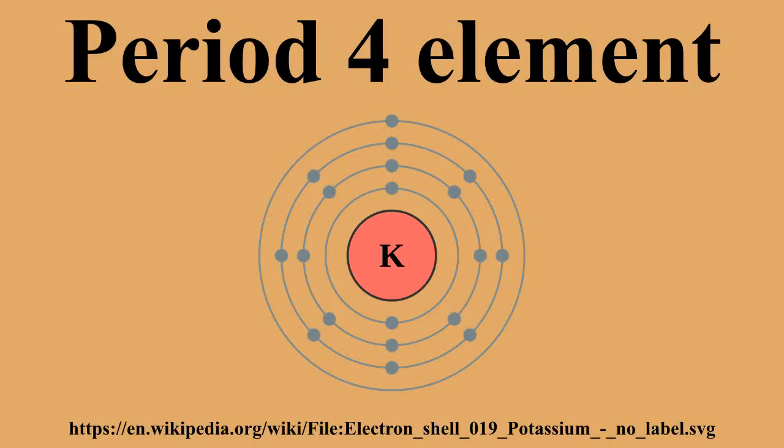Every single one of these elements is stable, and many are extremely common in the Earth's crust and core. It is the last period with no unstable elements at all. Many of the transition metals in period 4 are incredibly strong, and therefore commonly used in industry, especially iron.